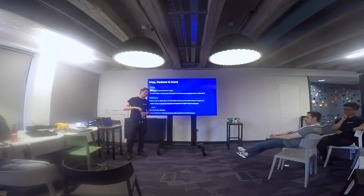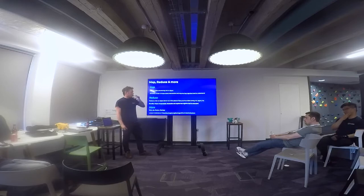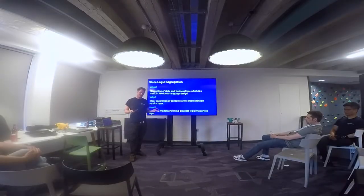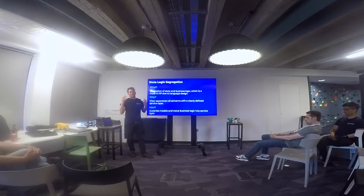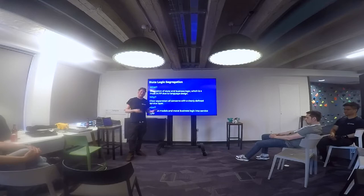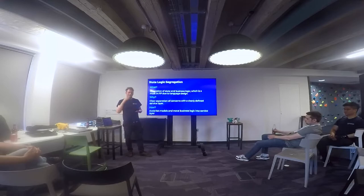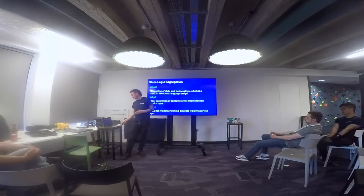State logic segregation — I made that term up — but in functional programming you don't really have a choice about this. You have functions and you have something holding your data. In OOP you can mix these together: you could have a massive model with hundreds of functions that mutate state and perform big actions. That makes it tricky to decide where to put things — in the model or in a service layer.